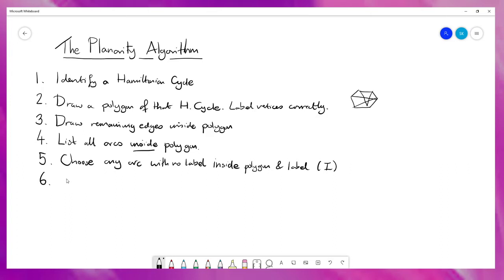Step six. So you look at any unlabeled arcs that cross the arc you just labeled. And one of four things is going to happen. If there are none, you return to step five and repeat that.